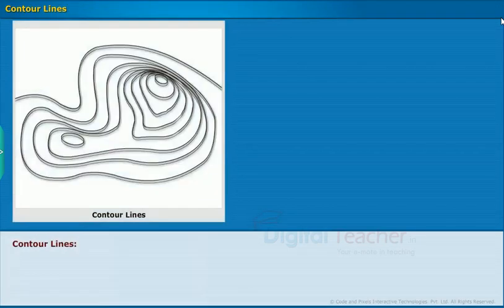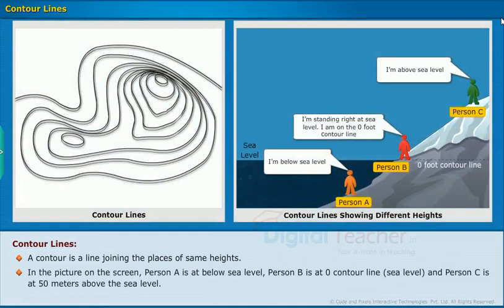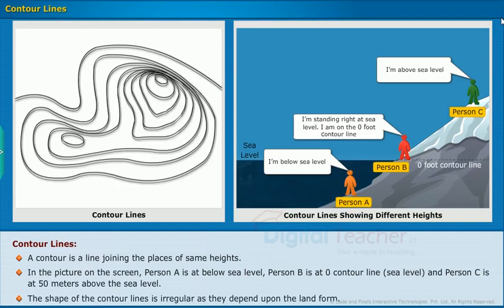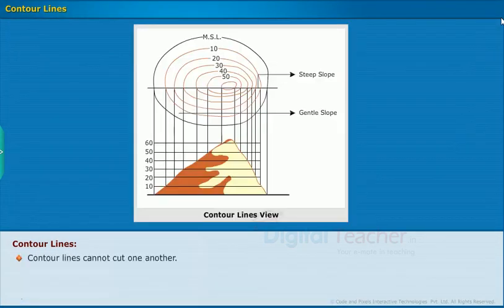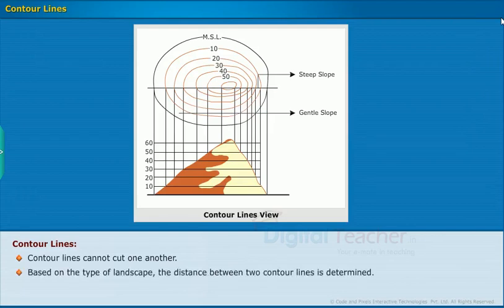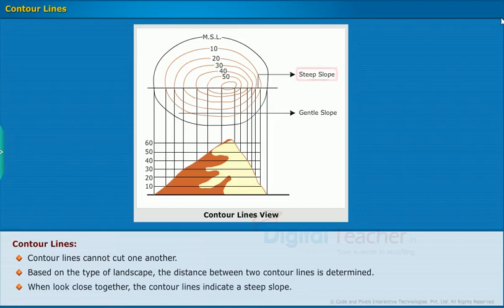Let us now learn about contour lines. A contour is a line joining places of the same height. In the picture shown, Person A is below sea level, Person B is at the 0 contour line or sea level, and Person C is at 50 meters above sea level. The shape of contour lines is irregular as it depends on the landform. Contour lines cannot cut one another. When contour lines are close together, they indicate a steep slope; when they are far apart, they represent a gentle slope.